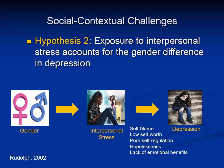We examined this hypothesis in an early adolescent sample of fifth to eighth graders, looking specifically at stress in the friendship domain. As we expected, higher levels of friendship stress accounted for the gender difference in depression.